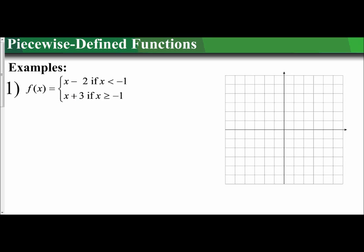The first way deals with the idea of locating your critical values. What that means is the critical values are based off of the boundaries — based off of the conditions in the piecewise defined function. It's based off of these inequalities.